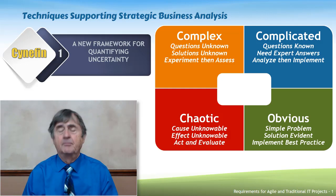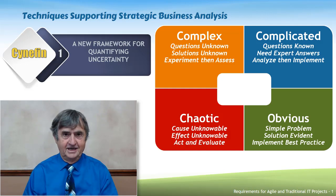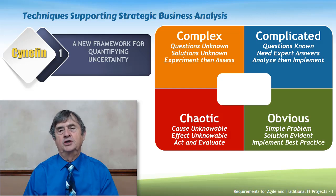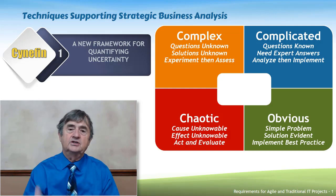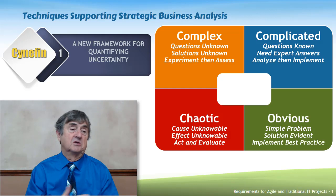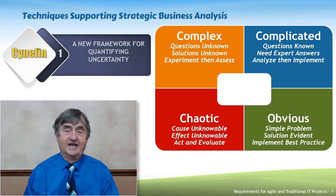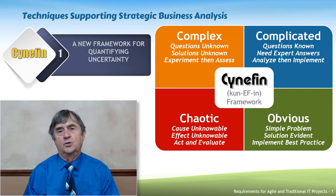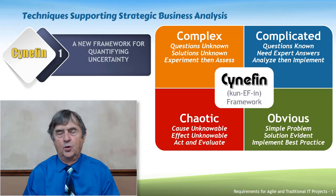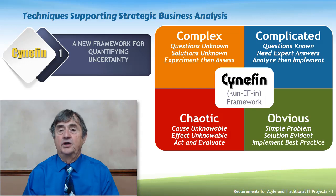One important implied point about KNEFIN is that people like to try to solve every problem with a simple solution. If you think the problem is simple and implement a simple solution, but it turns out the problem was not simple, the situation can very easily fall into the chaotic domain — where your production system has just failed and you have no backups or restore capability. KNEFIN is a phenomenal tool for quantifying uncertainty, giving you guidance on how to deal with each domain based on where your problem or project falls.